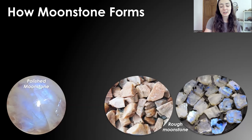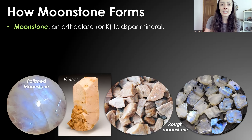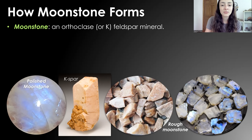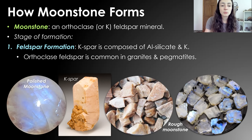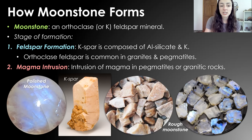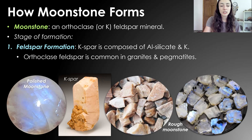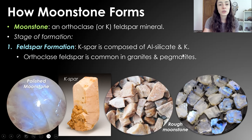Next we'll talk about moonstone, another personal favorite — very similar to opal in its sheen, though not in composition. Moonstone is actually a feldspar mineral; specifically, it is the potassium feldspar mineral orthoclase, which is sometimes nicknamed 'casebar,' and is composed of aluminum silicate and potassium. Orthoclase feldspar is common in granites and pegmatites — if you ever see pinkish granites or pegmatites, it's typically due to the potassium within the feldspar. Pegmatites are large crystals that form due to slowly cooling magma.